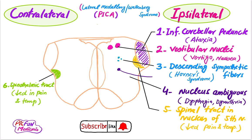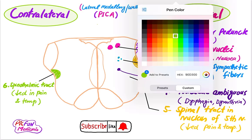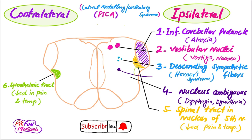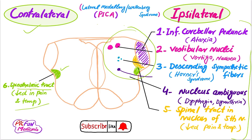There is one contralateral finding, due to the involvement of the spinothalamic tract. The patient will have loss of pain and temperature sensation on the contralateral side of the body. I have drawn it on this side to easily remember that this finding is on the contralateral side. So when these six structures are involved, five findings are on the ipsilateral side, and one finding — loss of pain and temperature on the contralateral side — is due to spinothalamic tract involvement.